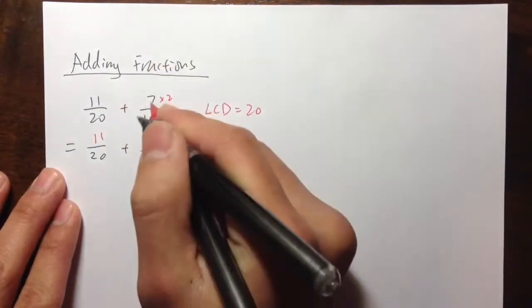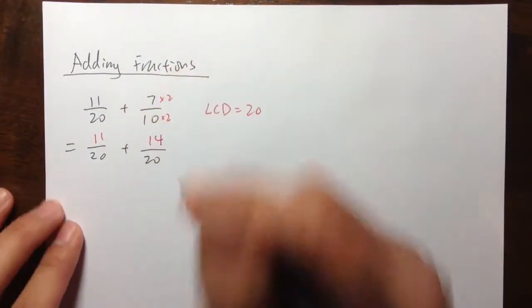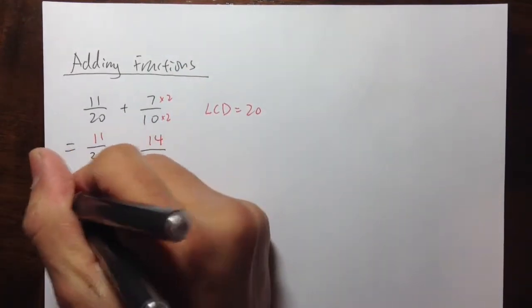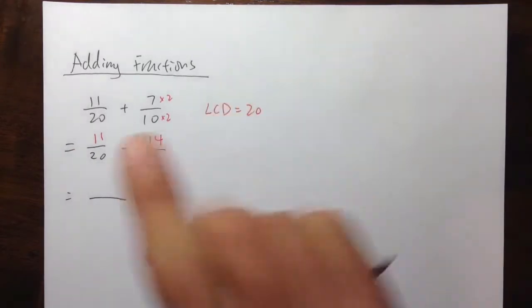I need to do that on the top though. So 7 times 2 is equal to 14. And the interesting thing is this, once we have the same denominator, when we add fractions, you just need to add the top.